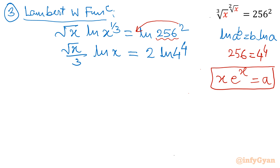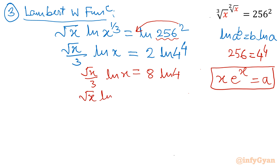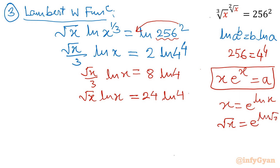I will first multiply the equation by 3, so it will become root x times ln x equal to 24 ln 4. Now root x can be written as e raised to the power ln of root x, since x equals e raised to ln x. So I will write e raised to the power ln root x times ln x equal to 24 ln 4. Now it is ln x only.